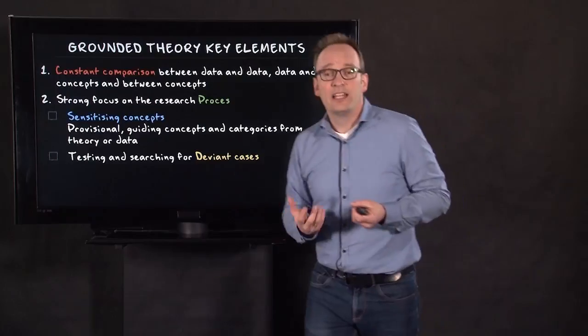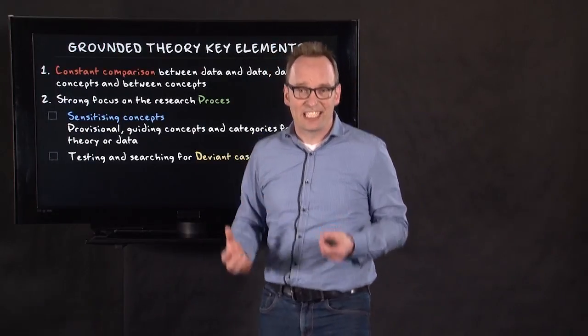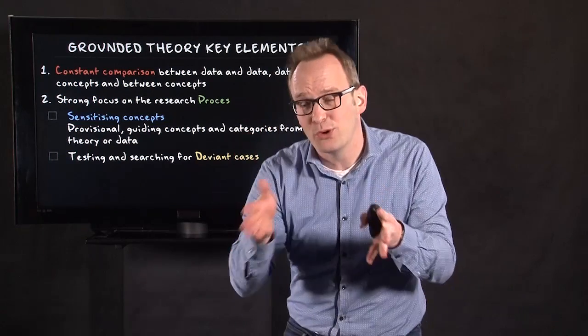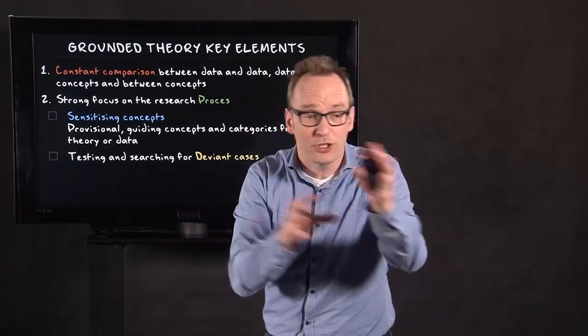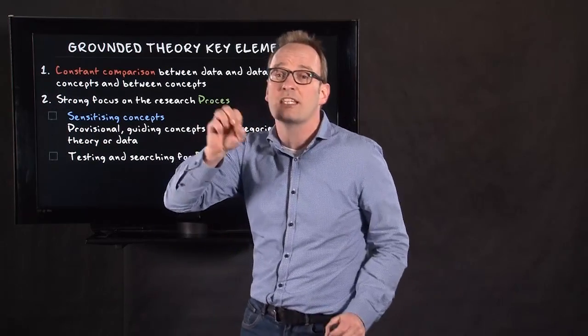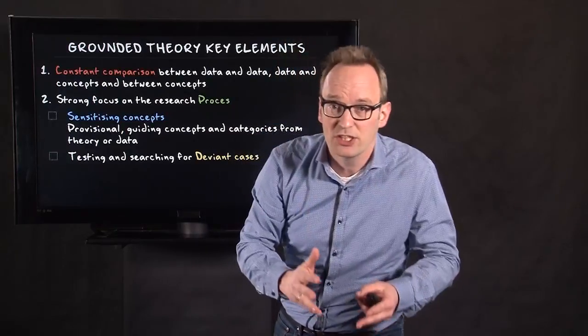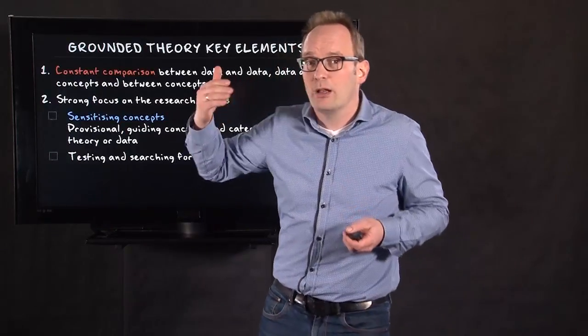The second bit is that you're testing for deviant cases. Like in analytic induction, you are on the lookout for deviant cases. In your constant comparison, you try to find these deviant cases because they help you. Similarities help you? Definitely. But contradictions help you probably much more.